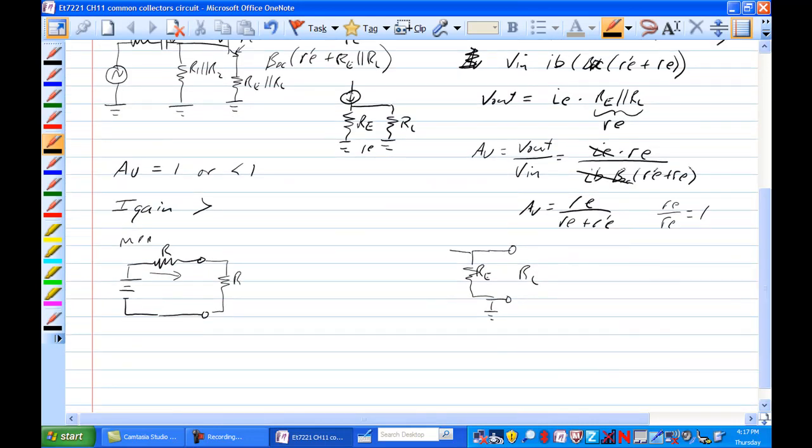What else do we see? We see this transistor thing, which has an R prime E on this side of it, on the emitter side of it.